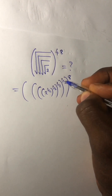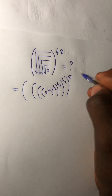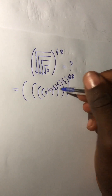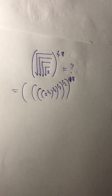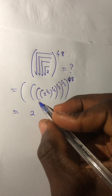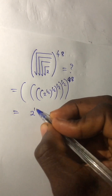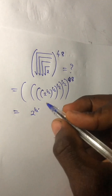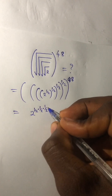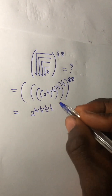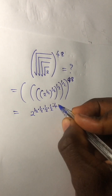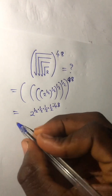There are four factors of 1 over 2, raised to the power 48. So this becomes 2 raised to the power 1 over 2 times 1 over 2 times 1 over 2 times 1 over 2, times 48.